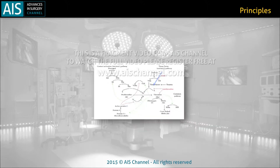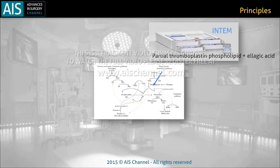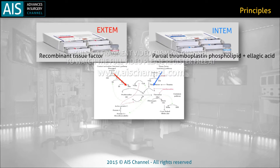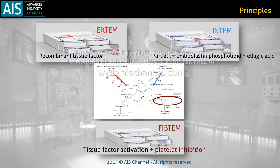Partial thromboelastin phospholipid analog used to assess the coagulation process via the intrinsic pathway is called INTEM. Recombinant tissue factor used to assess the coagulation process via the extrinsic pathway is called EXTEM. This analysis can be done without platelets for qualitative assessment of the fibrinogen status, and it is called FIBTEM.